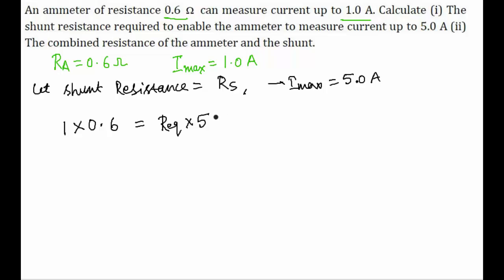This 5 is the maximum current and R equivalent is the equivalent of the shunt and ammeter when they are in parallel. R equivalent will be Rs into Ra by Rs plus Ra. And this is Rs into 0.6 divided by Rs plus 0.6.